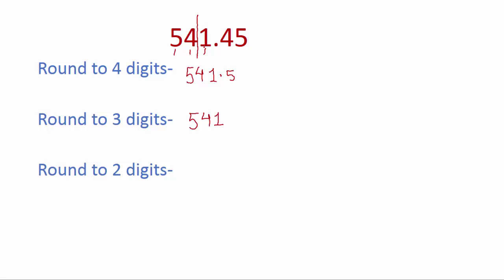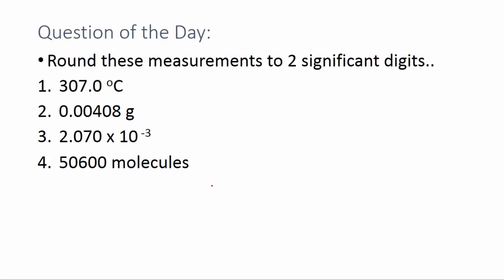The next digit is one, so we keep four as it is and five as it is. Keep in mind this one is before the decimal, so we will turn this one to zero. After the decimal, the digits — four, five — we just drop them.